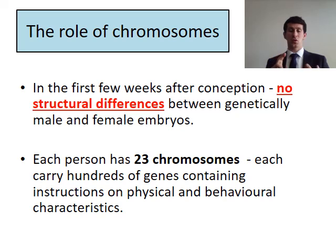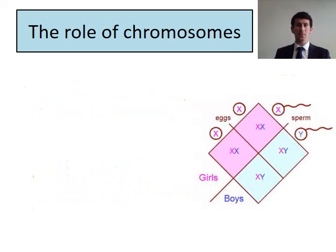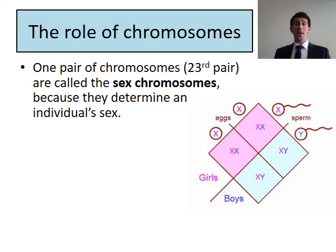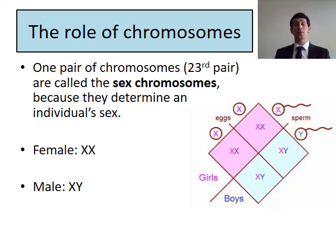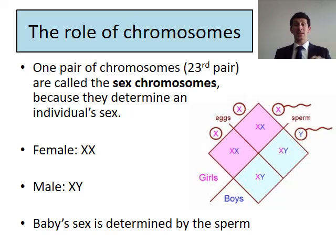These genes will determine your skin colour, eye colour, hair colour, aggression levels, and your personality. Each person has 23 different chromosomes. One pair — the 23rd pair — are called the sex chromosomes, because it's that chromosome that determines an individual's sex. Females have XX chromosomes, males have XY on that 23rd pair. The baby's sex is determined by the father, by the sperm, because sperm is the only thing that carries the Y chromosome.